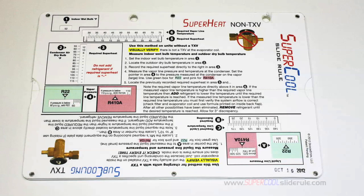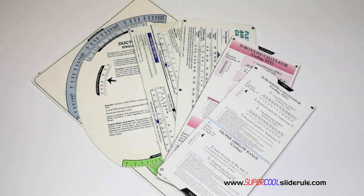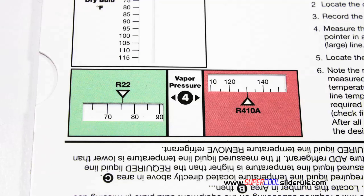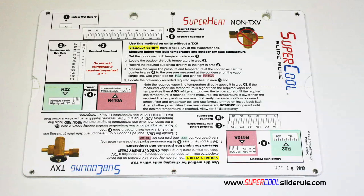I'd like to take a minute to introduce you to the coolest tool in the HVAC industry. Historically, technicians have carried four or five different slide rules — one for R22, one for R410A, one for metal duct sizing, one for flexible duct sizing, and yet others for diagnostics or troubleshooting. Thankfully, those days are gone. This one tool will allow you to charge a system with R22 or R410A in either the superheat or subcooling method.